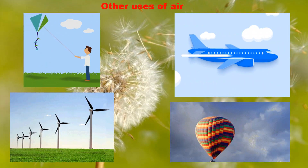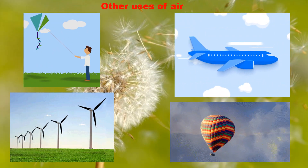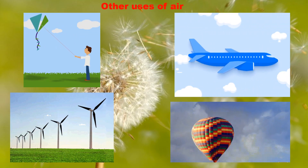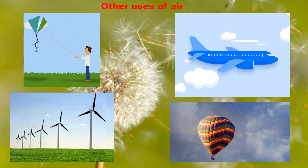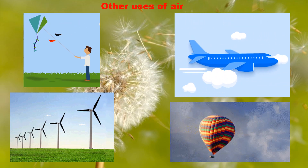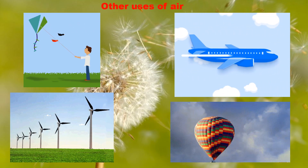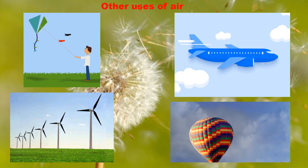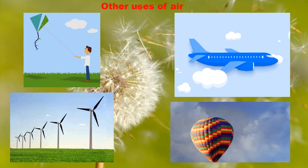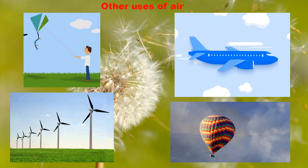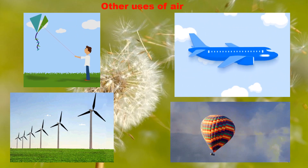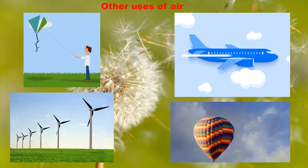Today we are going to learn about other uses of air. On page 59, let us see what it says. Air has many uses. Air helps in flying kites. It moves the fan of a windmill. It helps aeroplanes and helicopters to fly in the sky. It also helps a hot air balloon to go up.